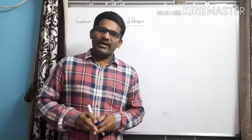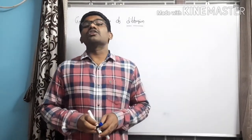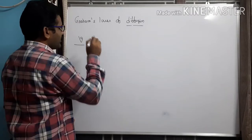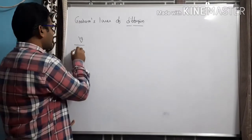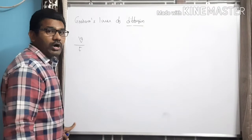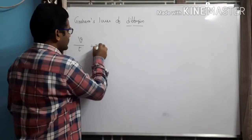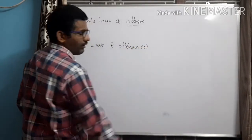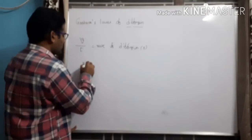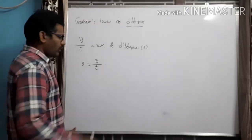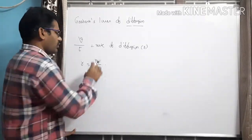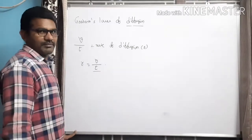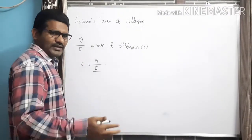The volume occupied by the gas in unit time is called the rate of diffusion. The rate of diffusion is denoted by R, where R = V/T. Here, R is the rate of diffusion, V is the volume occupied by the gas, and T is the unit time — which may be one second, one minute, one hour, or one day.